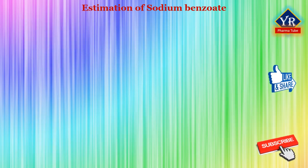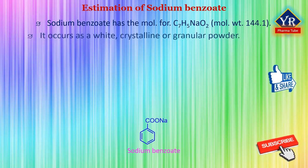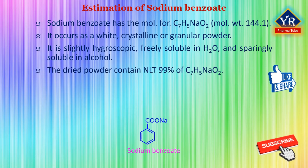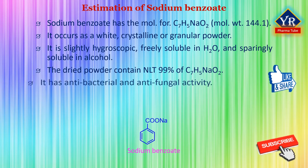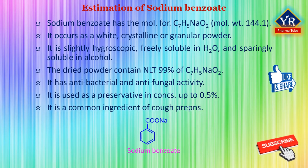Estimation of sodium benzoate. Sodium benzoate has the molecular formula C7H5NaO2 and its molecular weight is 144.1. It occurs as a white crystalline or granular powder or flakes. It is slightly hygroscopic, freely soluble in water and sparingly soluble in alcohol. The dried powder contains not less than 99% of sodium benzoate. Sodium benzoate has antibacterial and antifungal properties. It is used as a preservative in pharmaceutical formulations, including oral preparations in concentrations up to 0.5%, and is also a common ingredient of cough preparations.